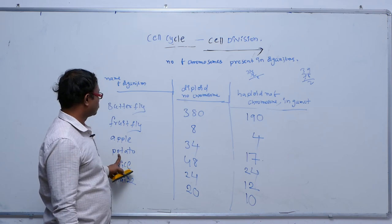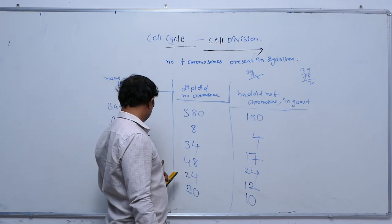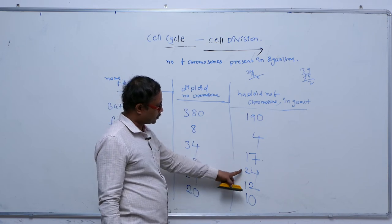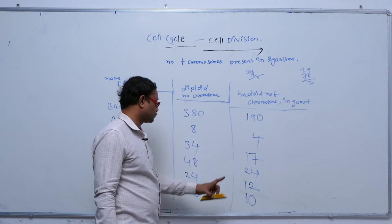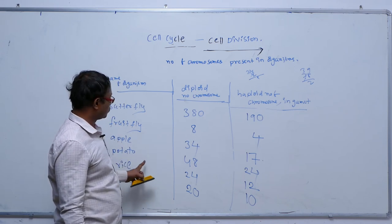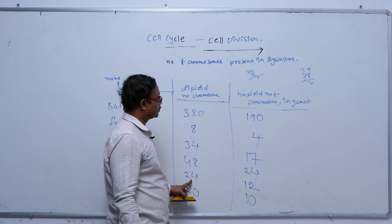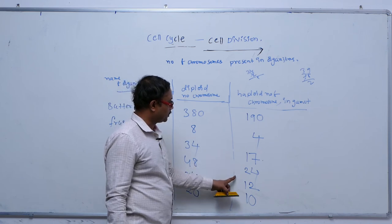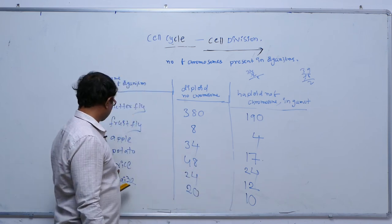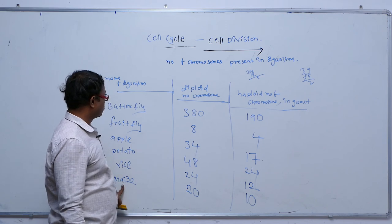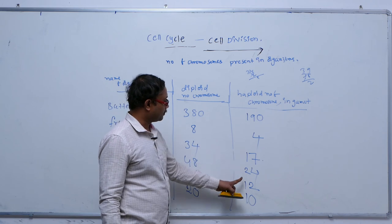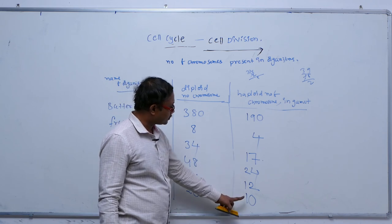In potato, the diploid number of chromosomes is 48 and the haploid number is 24. In rice, the diploid number is 24 and the haploid number in each gamete is 12. In maize, the diploid number is 20 and the haploid number in each gamete is 10.